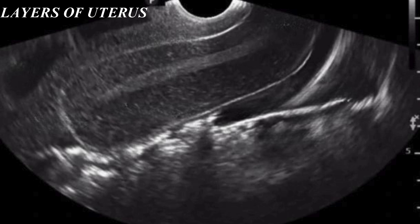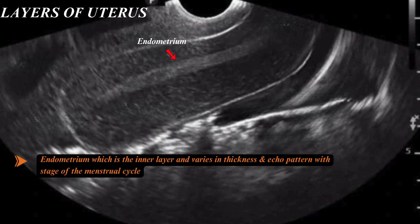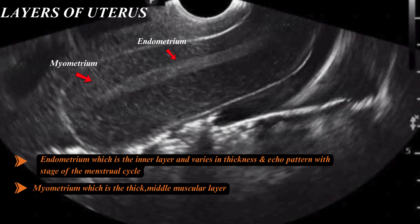Let's talk about the layers of the uterus now. Number one is the endometrium, which is the inner layer that varies in thickness and echo pattern with the stage of the menstrual cycle. Number two is the myometrium, which is the thick middle muscular layer. Number three is the serosa, which is a thin outer layer of the uterus.